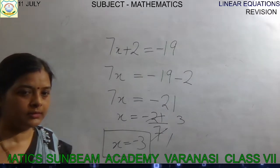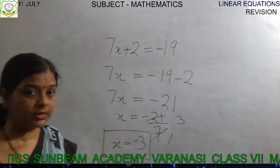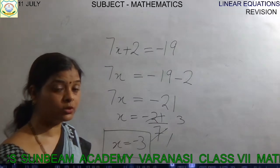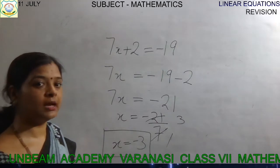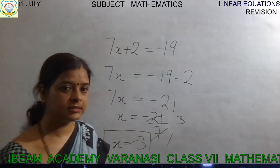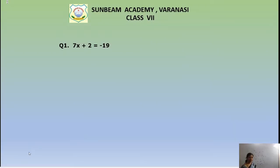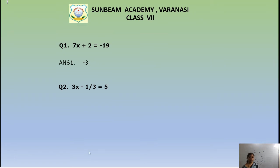Clear? In this way you can solve. Whatever you solved in your rough notebook should be matching with my answer. The answer is x = -3. Now the next question — question number 2. Write down in your rough notebook: 3x - 1/3 = 5. I am also writing it on the board. Quickly solve it.